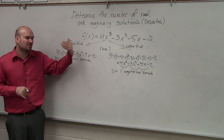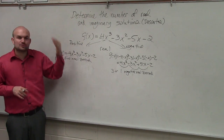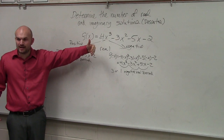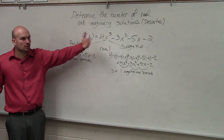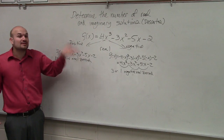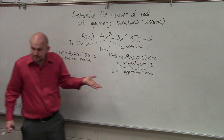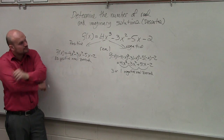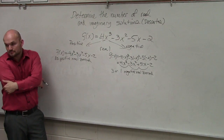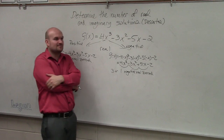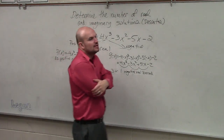Now remember, why is it one? Because what you're doing is you're subtracting. You always subtract two, or an even number. So it's three or one negative real zeros.